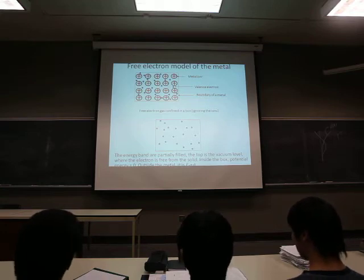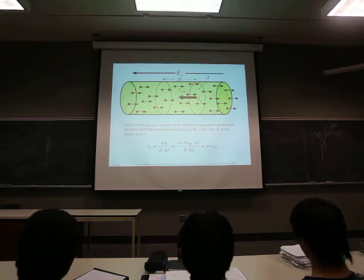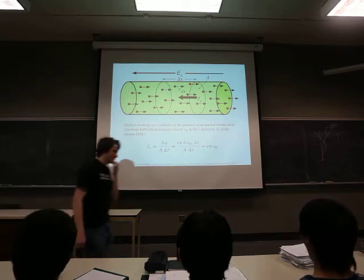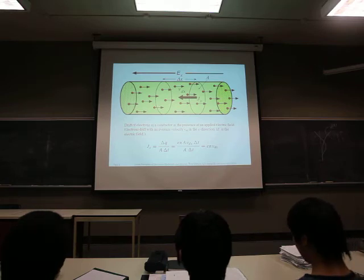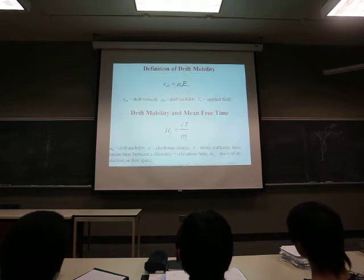So based on this model, we calculated the current density for an electron, is given by this equation. This is a function of carrier density and the drift velocity. Later, we found out that velocity is a function of mean free time and mobility.